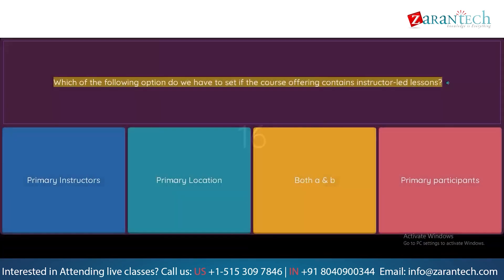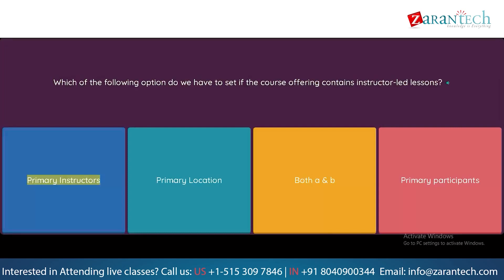Question: Which of the following options do we have to set if the course offering contains instructor-led lessons? Option 1: Primary Instructors. Option 2: Primary Location. Option 3: Both A and B. Option 4: Primary Participants.